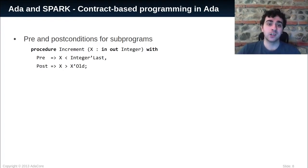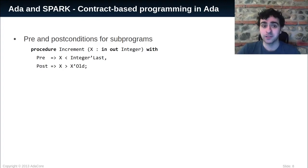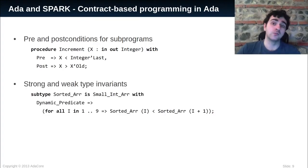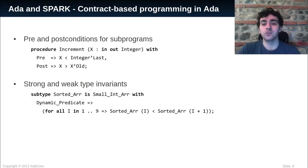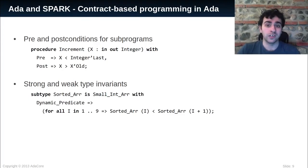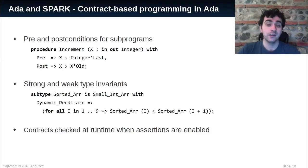The precondition states that it's not possible to call increment on the last integer, and indeed we cannot increment the last integer. The postcondition states that the value of x at the end of the execution of increment will be strictly larger than the value before the call. It's also possible to define strong and weak type invariants. Strong invariants need to hold all the time, while weak invariants need to hold only at the boundary of the enclosing package of the type. This example shows a definition of a type of array sorted in ascending order. The invariant here is strong, so it should hold all the time. It states that for every index in the array before the last one, the value stored at the index should be smaller than the value stored at the next index. All these contracts can also be executed at runtime if we specify it at compilation.